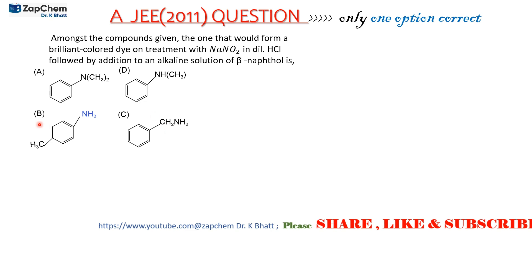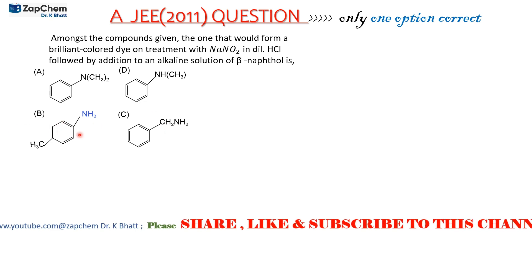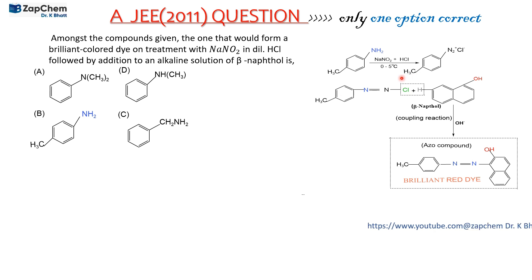This reaction occurs. This compound, paranitrotolidine, reacts with sodium nitrite and HCl at 0 to 5 degrees Celsius to form a diazonium chloride. This diazonium chloride has a positively charged N2+ group and Cl-. This can also be written this way.